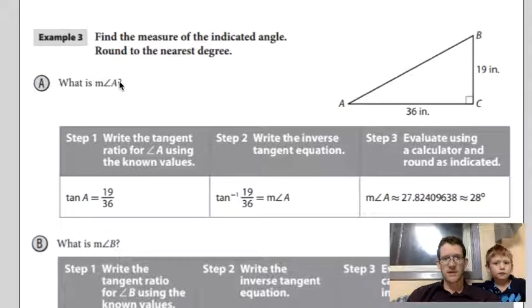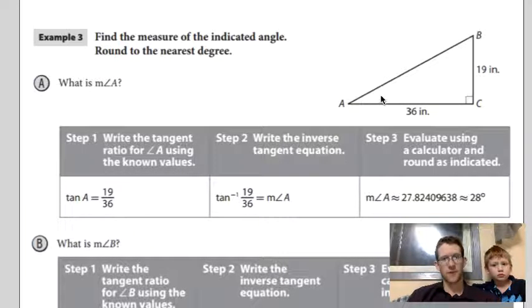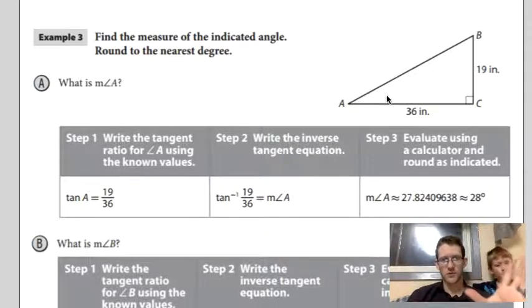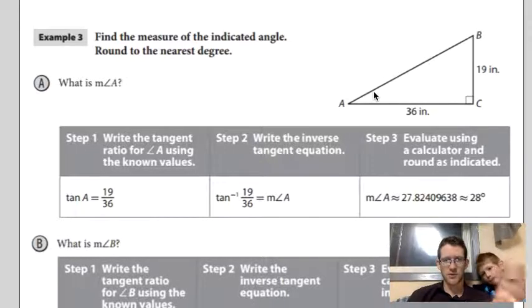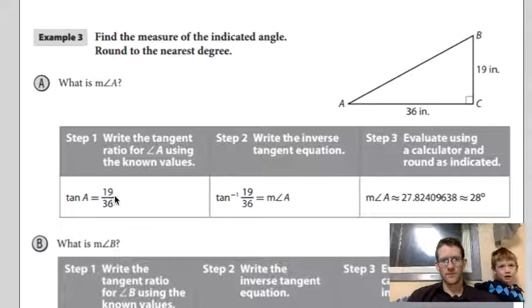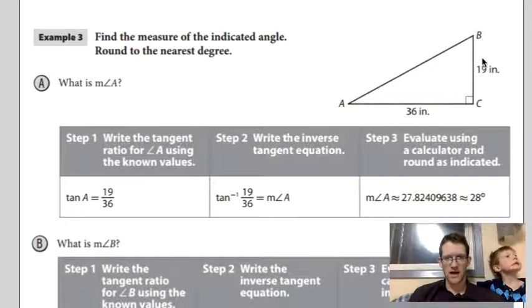So in this case, it asks what is the measure of angle A? Before, the only thing we could do is calculate the hypotenuse using the Pythagorean theorem. But again, really powerful new tool here. We can calculate actual angles when we have almost no other angles here. So in this case, we write out the problem the exact same. We say the tangent of angle A is equal to the opposite over the adjacent.